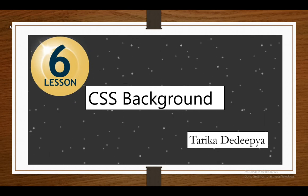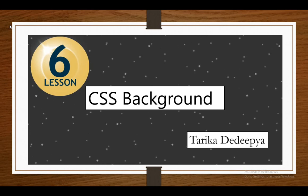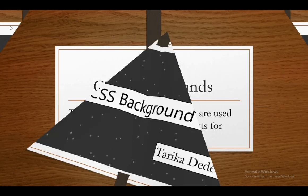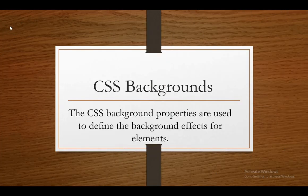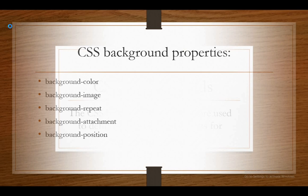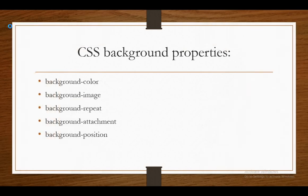Now I am going to tell about CSS Background. The CSS background properties are used to define the background effects for elements. The CSS background properties are: CSS Background Color, Background Image, Background Repeat, Background Attachment, and Background Position. We are going to learn about all of these — color, image, repeat, attachment, and position.